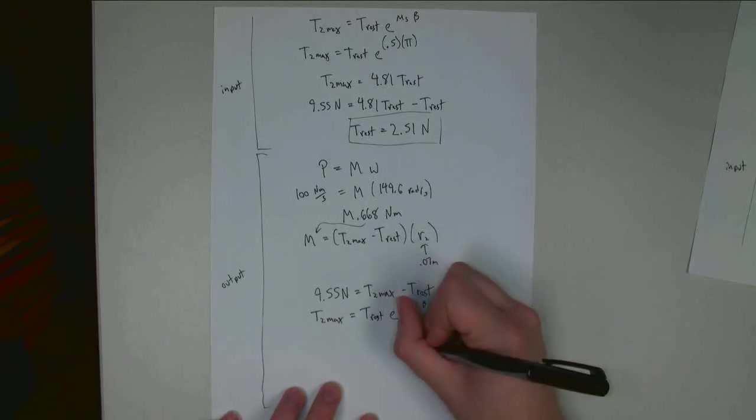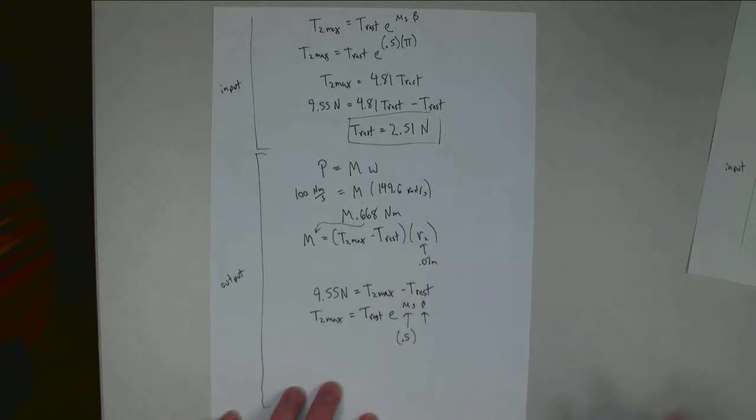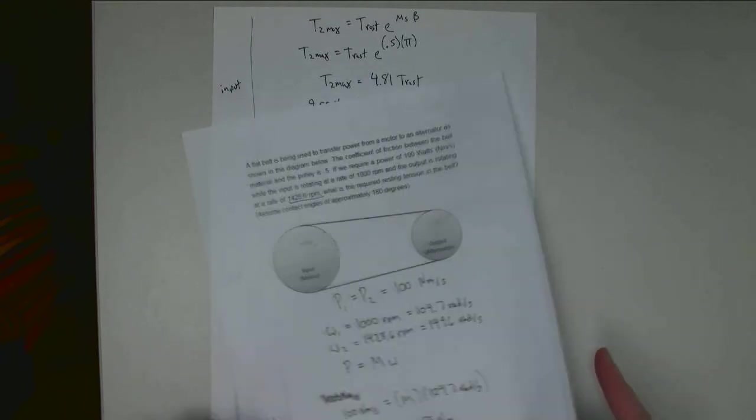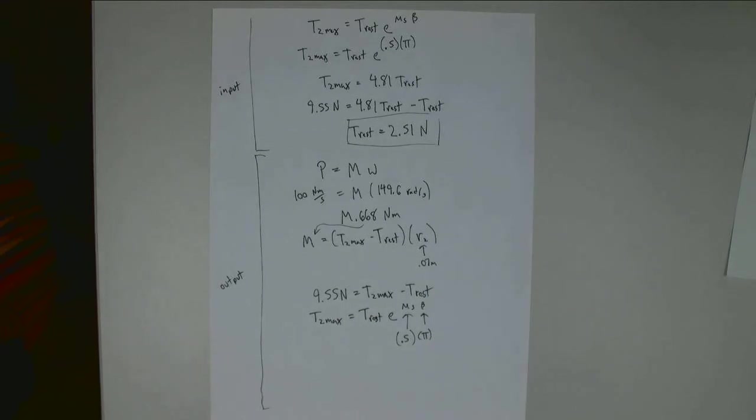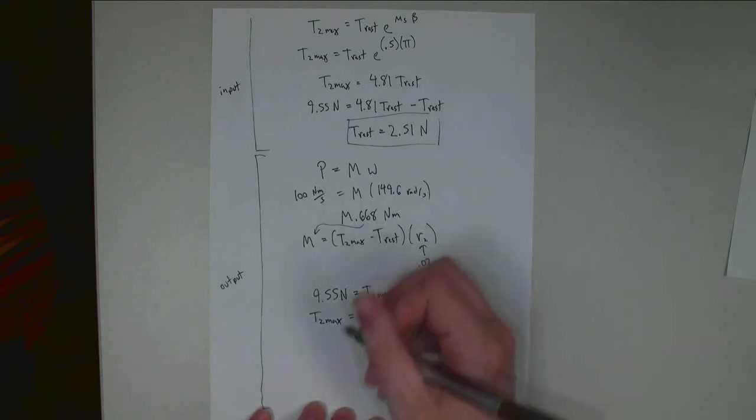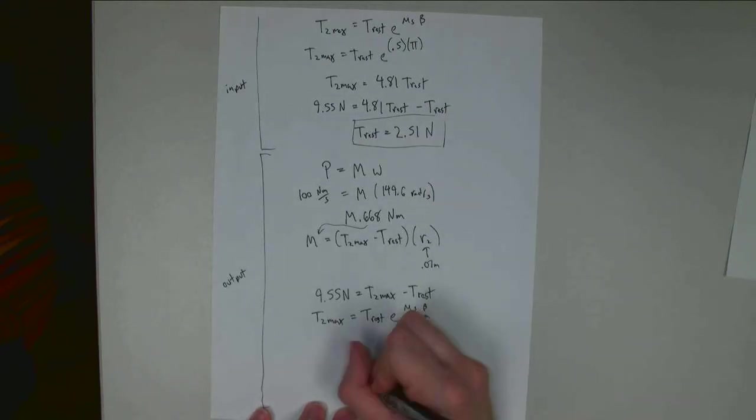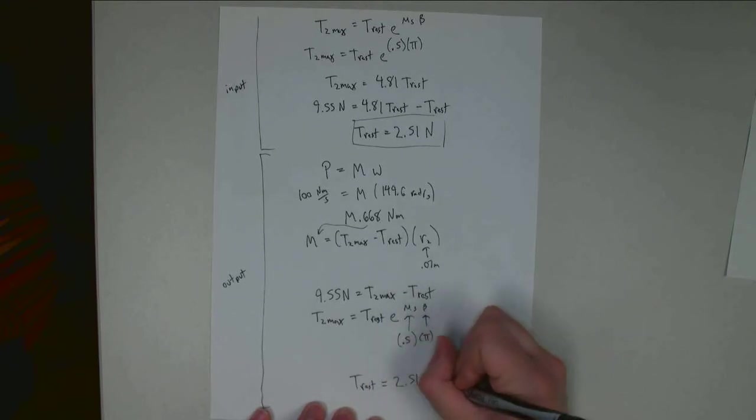And that is T2 max is equal to T1, or the resting tension, times E to the mu static times beta. Mu static is still equal to .5. And beta, I'm assuming both of these, they're both pretty close to 180 degrees, so they're both pi radians. And this is the exact same equation I had before as well. And so, with both of these equations being the same, I end up with the same value. I can go through the exact same kind of algebra I went through up here. But I find the minimum resting tension I require at this output is going to be 2.51 newtons.